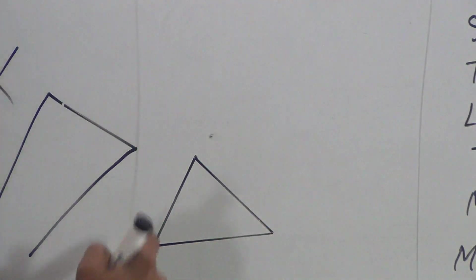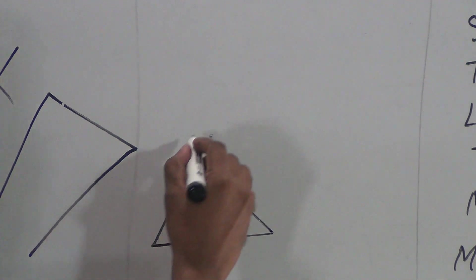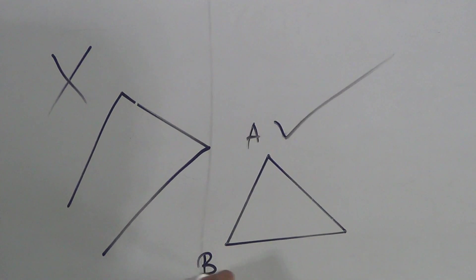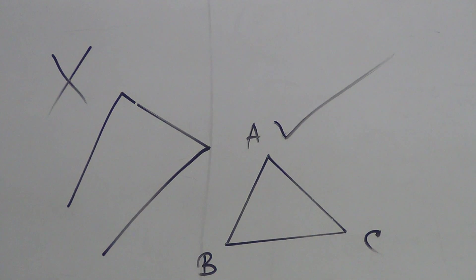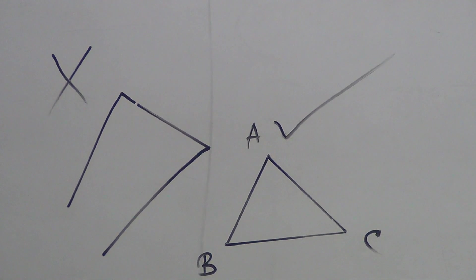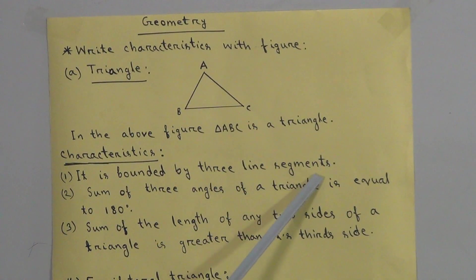Here three line segments exist and the three line segments make a bounded region, so it is a triangle. We say that ABC is a triangle. Dear students, at the time of drawing any geometric figure, you must use a scale and pencil.